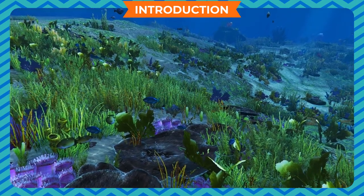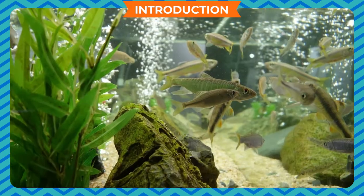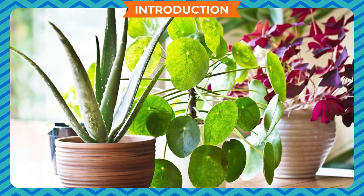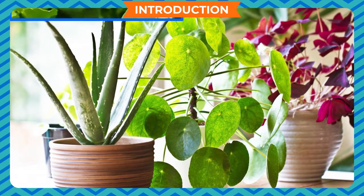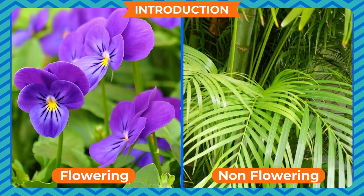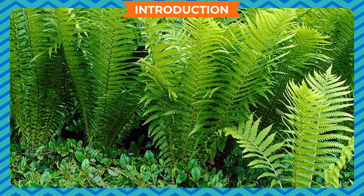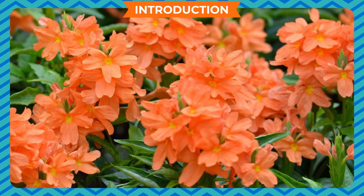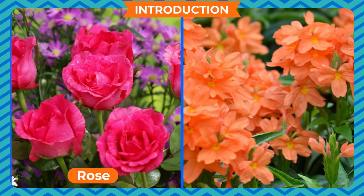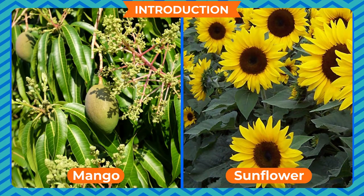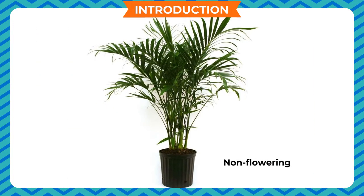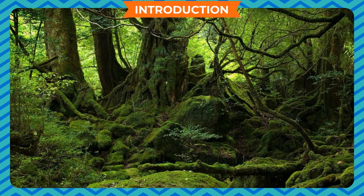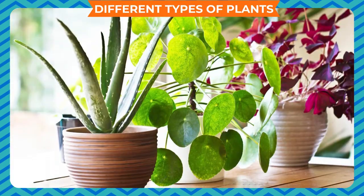All around us we see different types of plants; even underwater there are plants to support and sustain aquatic animal life. Depending on their features, plants are divided into two broad groups: flowering and non-flowering plants. They can be further divided into many subgroups. Examples of flowering plants are rose, sunflower, and mango. Non-flowering plants are ferns and mosses — they do not bear flowers.